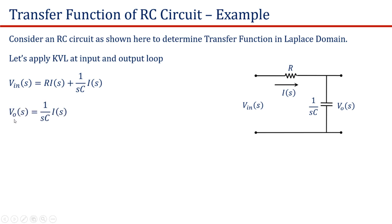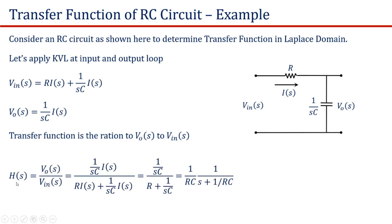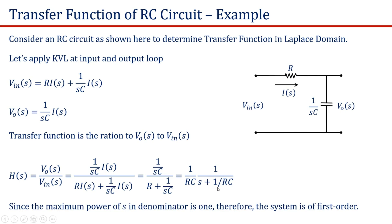Similarly, for the output loop, V_o(s) is equal to (1/sC)·I(s). To get the transfer function, let us divide the output voltage V_o(s) by the input voltage V_in(s). Accordingly, we get the transfer function H(s) is equal to V_o(s) divided by V_in(s). On simplification, we get H(s) equal to (1/RC) divided by (s + 1/RC). From this solution, it can be observed that the maximum power of s in the denominator is 1. Therefore, this is a first-order transfer function.